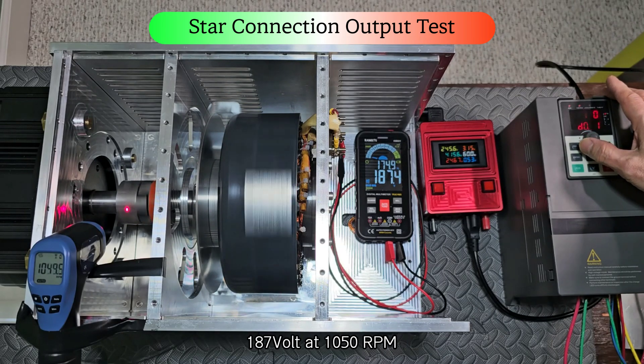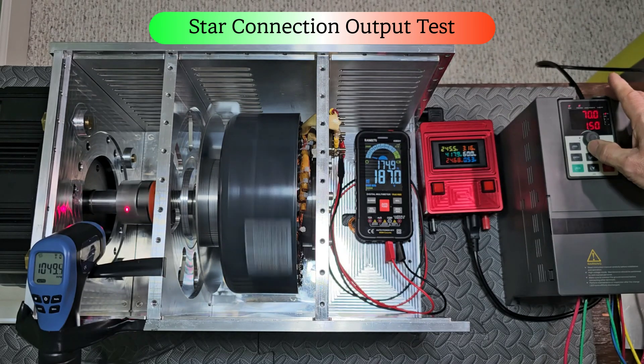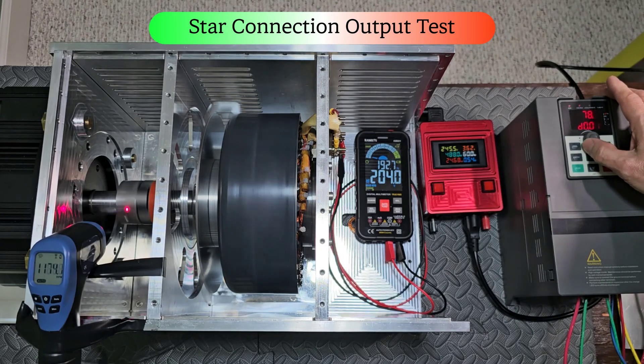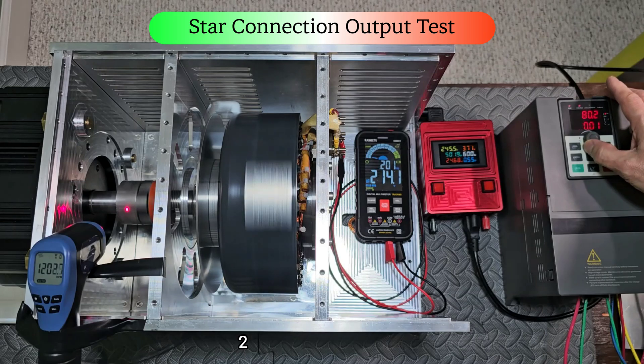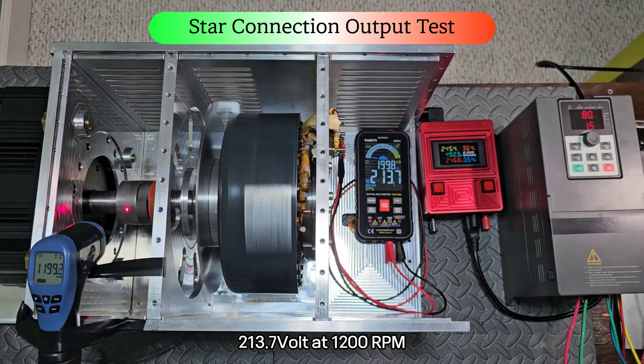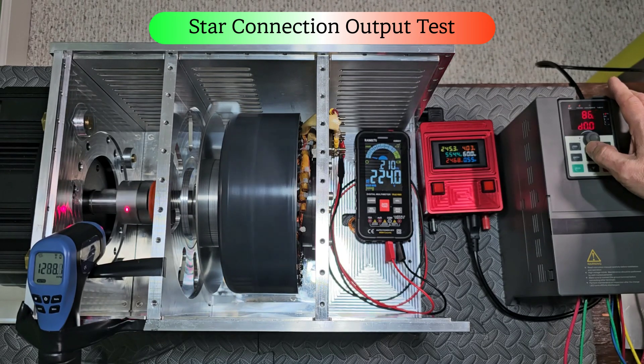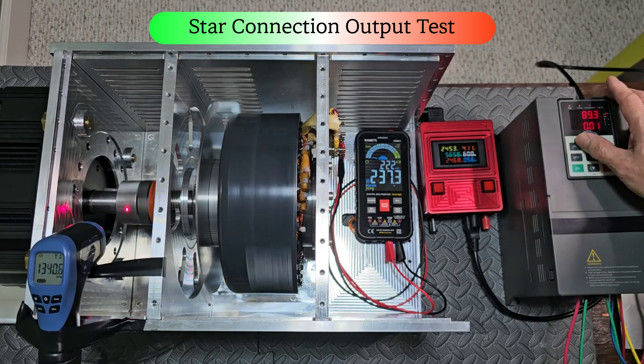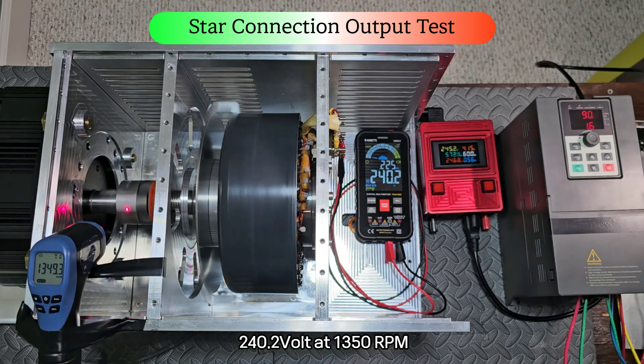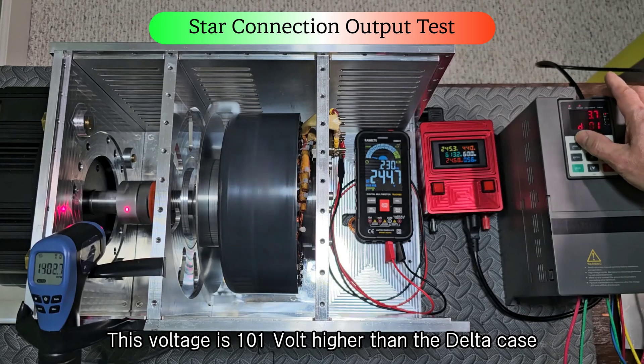187 volt at 1050 RPM. 213.7 volt at 1200 RPM. 233.7 volt at 1350 RPM. This voltage is 101 volt higher than the delta case.